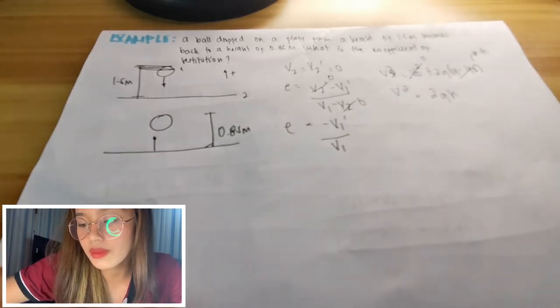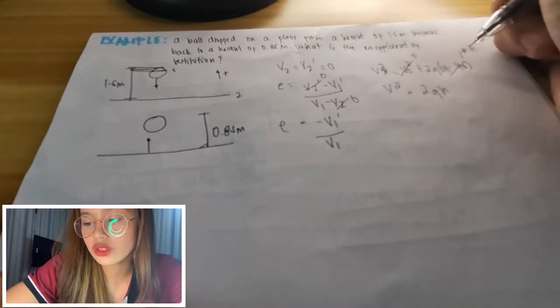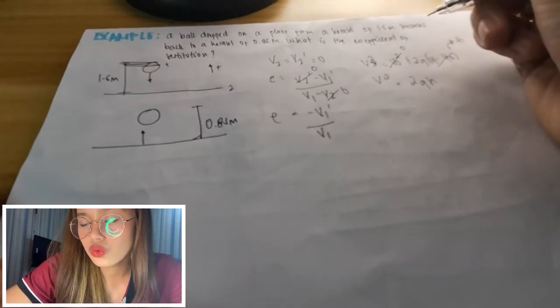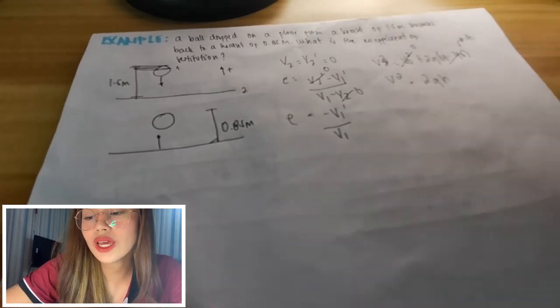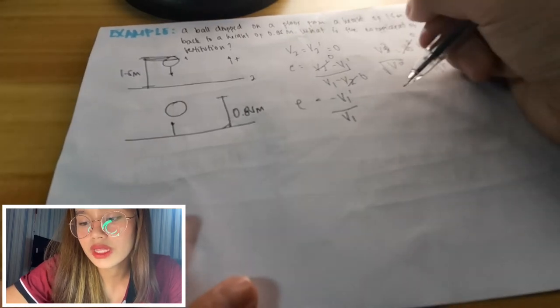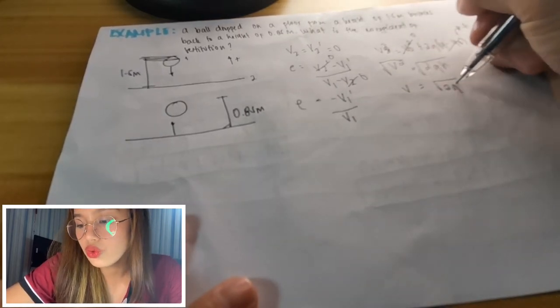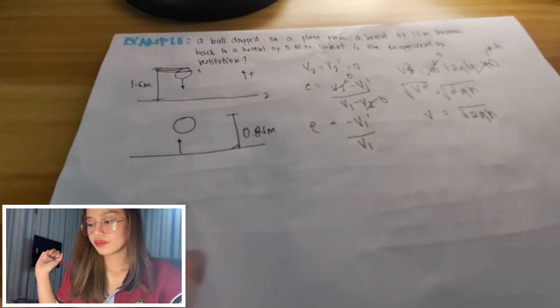what remains is v squared is equal to 2gh. So as I said earlier, we can make this y into h. So 2gh. So we see it's squared, so we can square root it to remove that. So v now is equal to square root of 2gh.